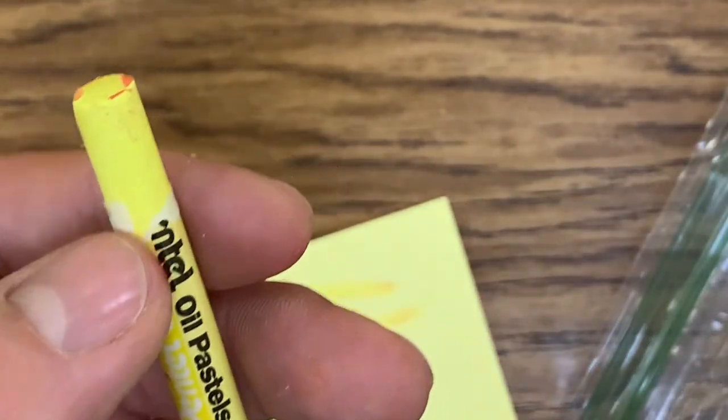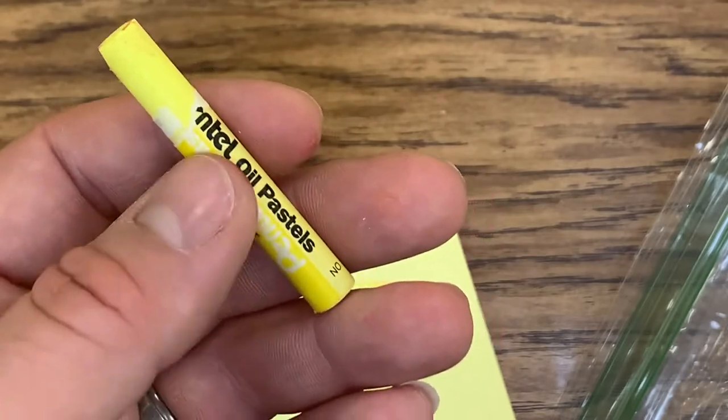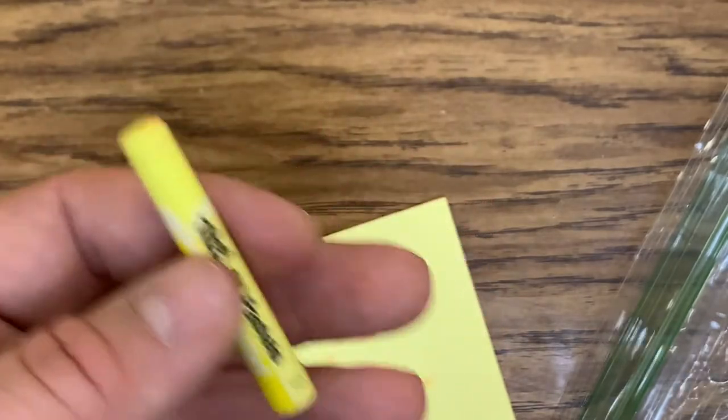So if you're going to peel off some of the paper, just don't peel all of it off. Because if you do take it off, that's when it has a tendency to break.